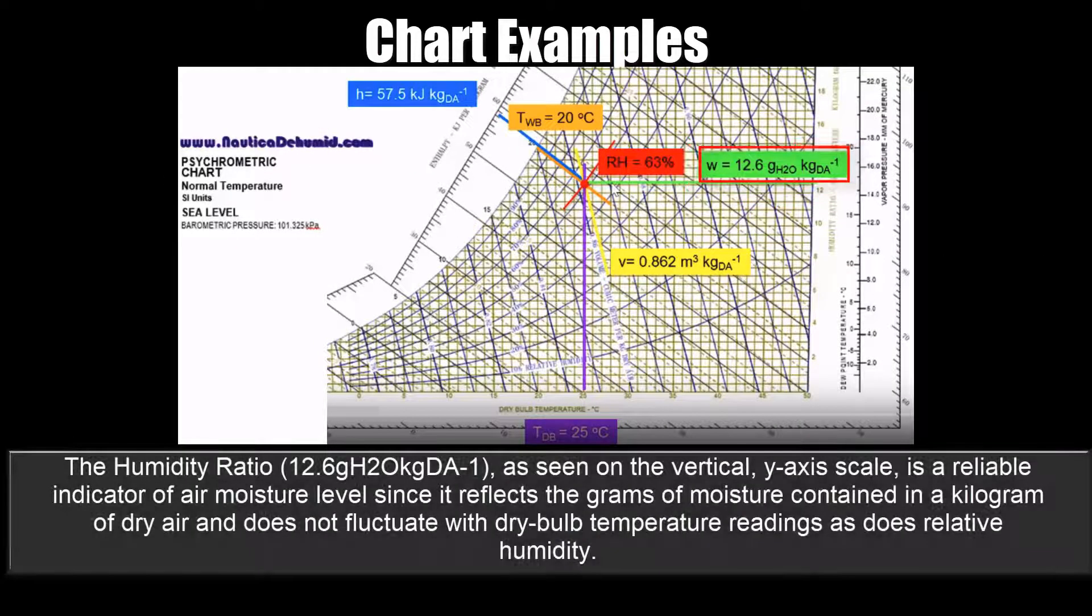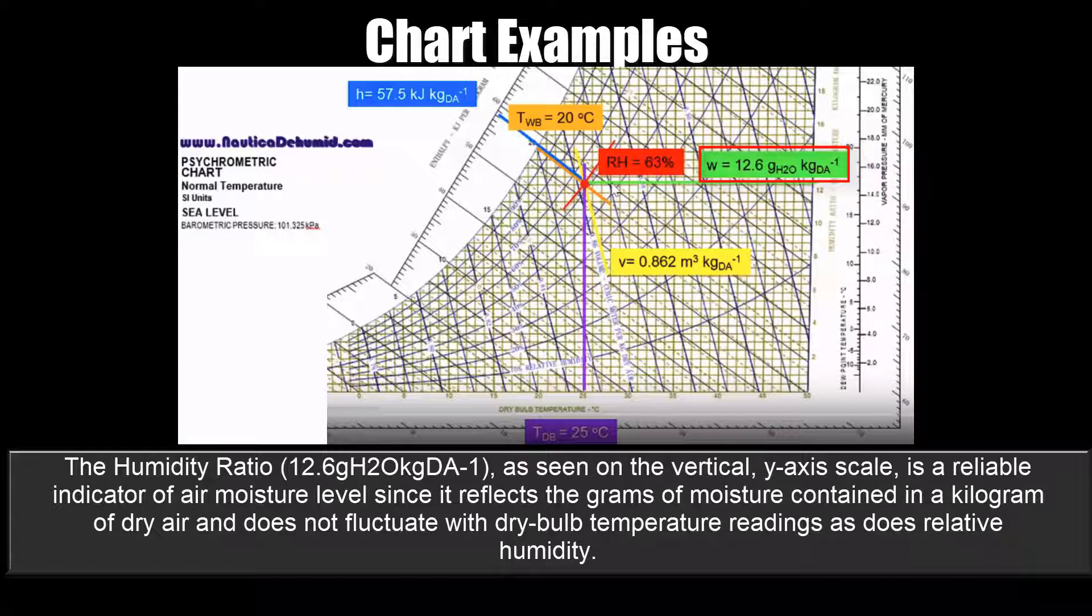The humidity ratio, as seen on the vertical y-axis scale, is a reliable indicator of air moisture level since it reflects the grams of moisture contained in the kilogram of dry air and does not fluctuate with dry bulb temperature readings as does relative humidity.